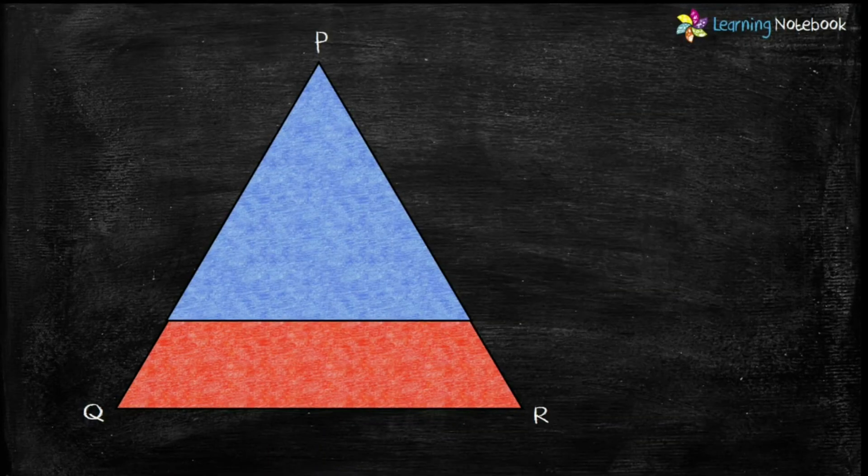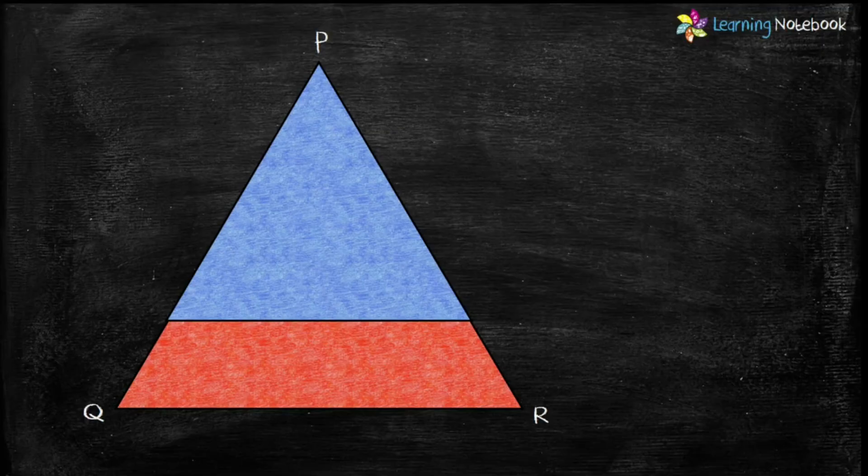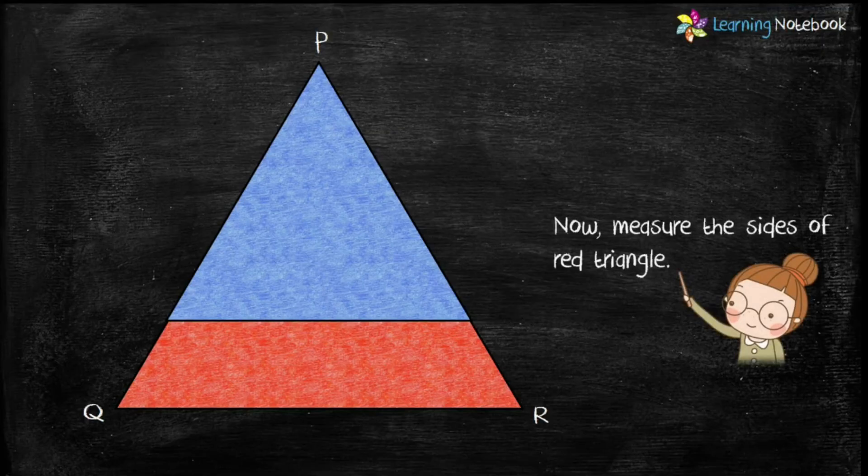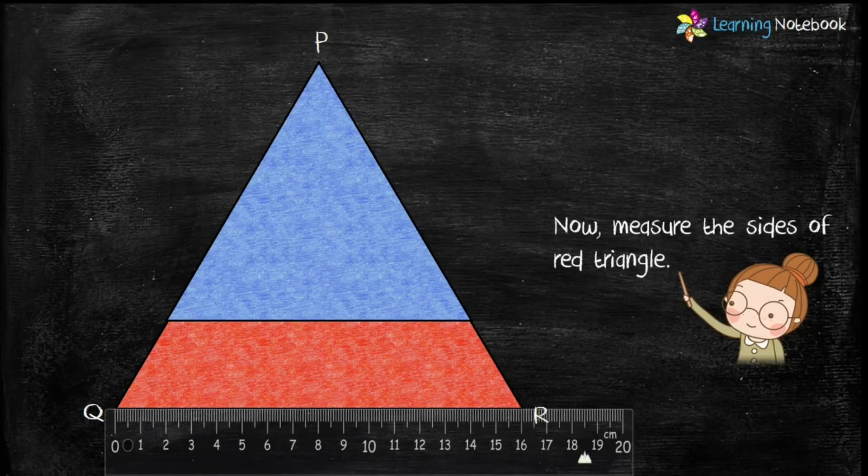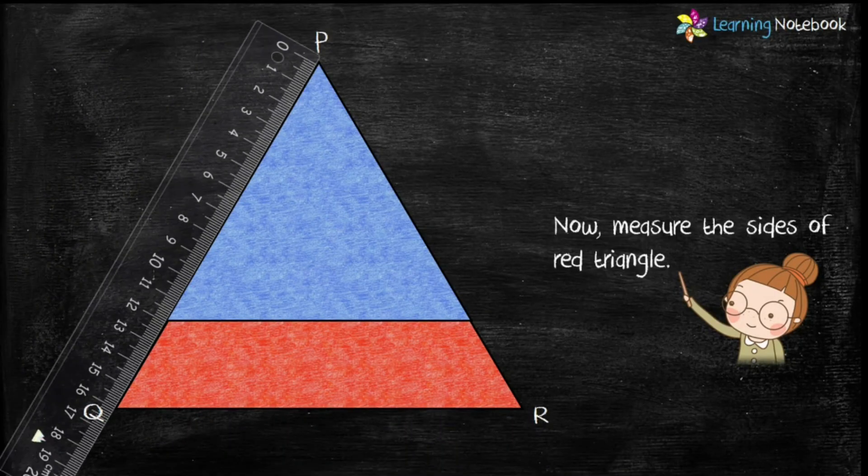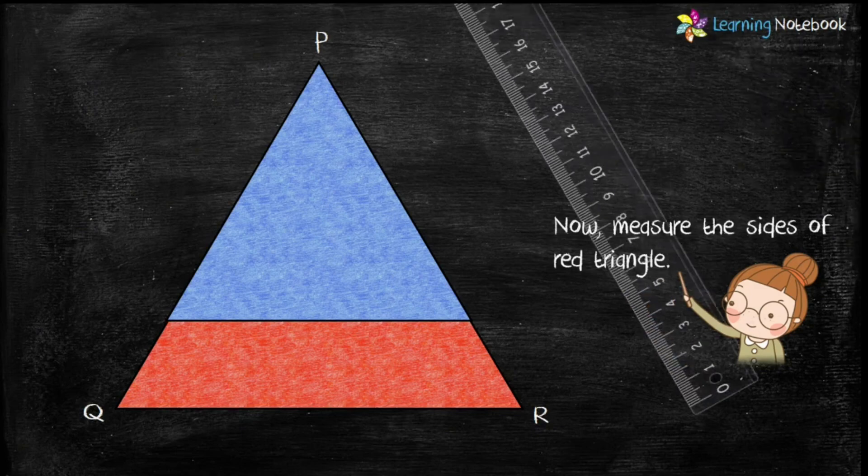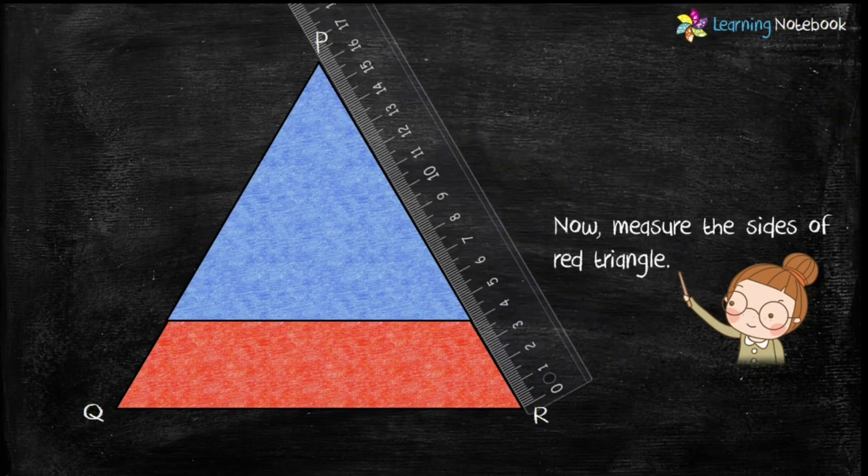We know each side of blue triangle is 12 cm. Now let's measure the sides of red triangle. And we find that each side of red triangle is 16 cm.